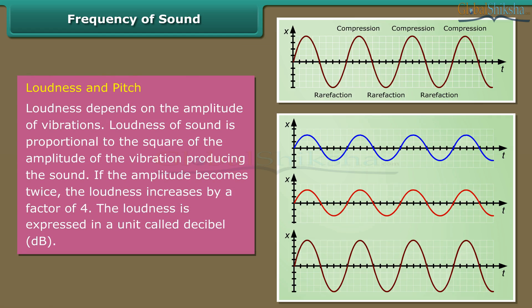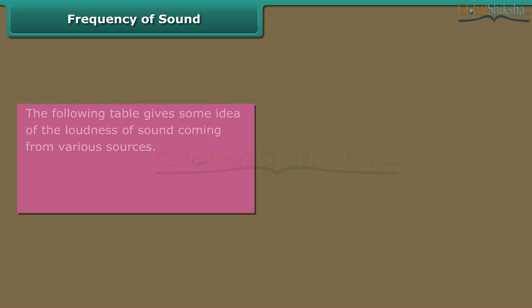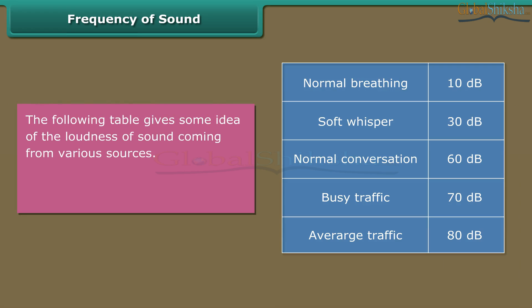Loudness and pitch. Loudness depends on the amplitude of vibrations. Loudness of sound is proportional to the square of the amplitude of the vibration producing the sound. If the amplitude becomes twice, the loudness increases by a factor of four. The loudness is expressed in a unit called decibel dB. The following table gives some idea of the loudness of sound coming from various sources. Above 80 dB, the noise becomes physically painful.